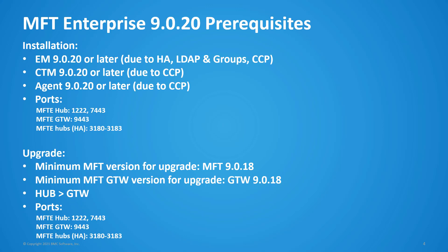On MFT hubs for high availability, ports 3180 through 3183. For Managed File Transfer Enterprise upgrade, the minimum MFT hub and MFT gateway version is 918. Perform the upgrade of the MFT hub first, then the MFT gateway, and prior to upgrade validate that the ports previously mentioned are open.